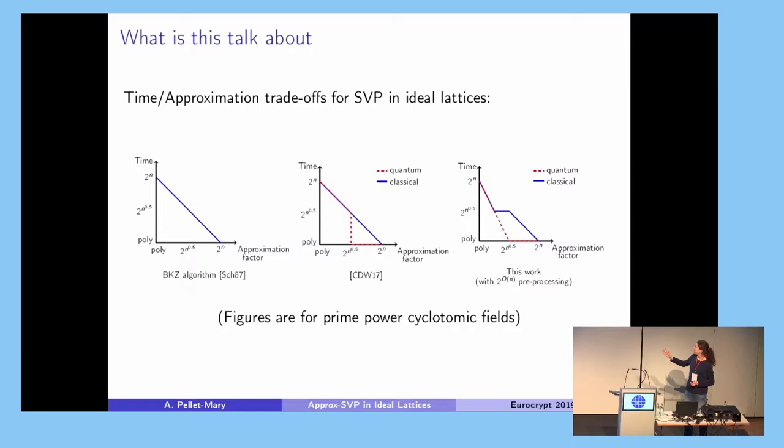If you don't care about ideal lattices and want an algorithm for any lattice, you have the BKZ algorithm on the left, which gives you some trade-offs. If you restrict yourself to ideal lattices, you have the CDW algorithm, which improves upon the BKZ algorithm in the quantum setting. What I want to discuss is an extension of the CDW algorithm where we obtain all the trade-offs in the quantum setting and some improvements also in the classical setting.